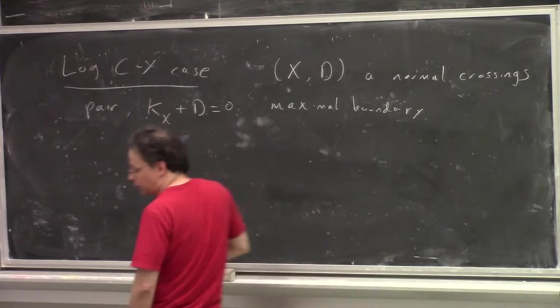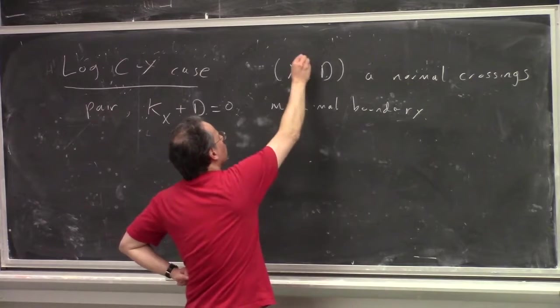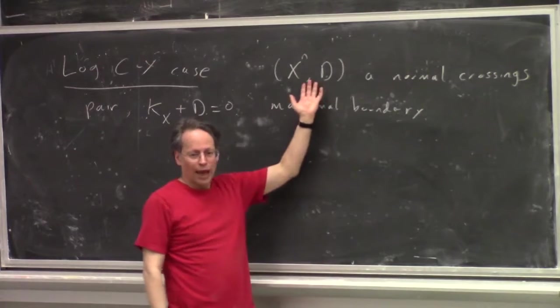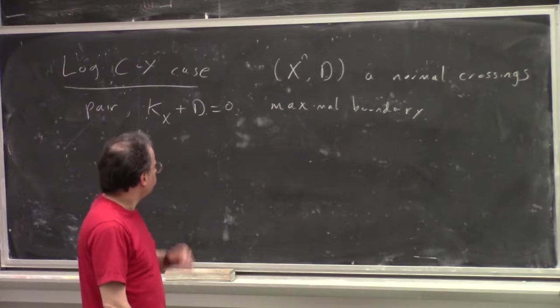And we might want some additional conditions, such as the maximality that Paul talked about, maximum boundary, meaning that D has a zero-dimensional stratum, some intersection of, if X is n-dimensional, there's some intersection of n irreducible components.